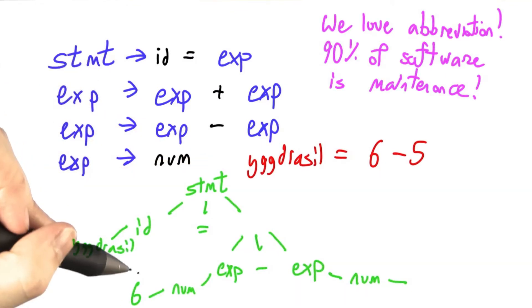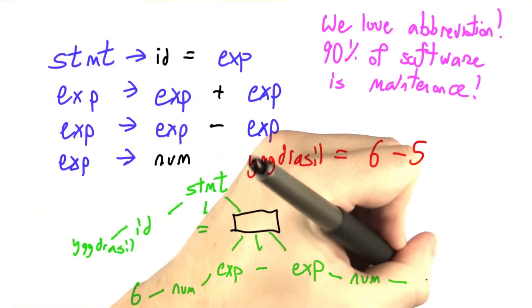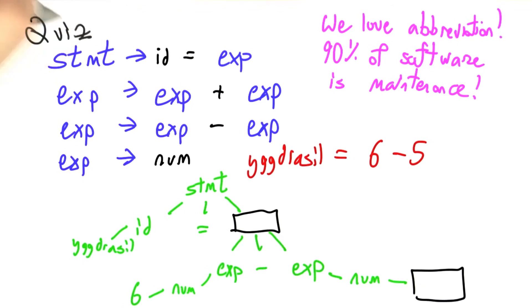So I've written out a parse tree, a bit squashed at the bottom, but still recognizable, for this phrase Yggdrasil equals 6 minus 5. But I've forgotten two labels. It's quiz time.